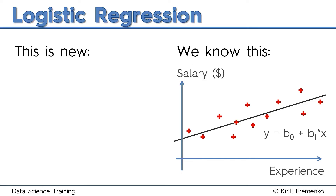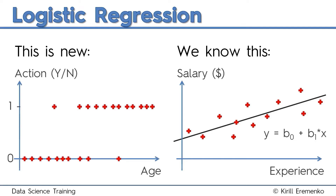They send out an offer by email to a lot of customers to purchase a certain product. You've got a sample of those customers they contacted recently — you've got their age, and also a variable for whether or not they took action: did they buy a product, open an email, respond? It's very black and white. But intuitively we can see some correlation — the observations on the bottom are a bit more to the left, observations on the top are a bit more to the right, implying that older people are more likely to take action on this offer and younger people are more likely to ignore it.